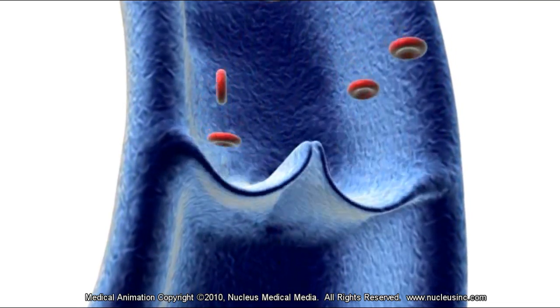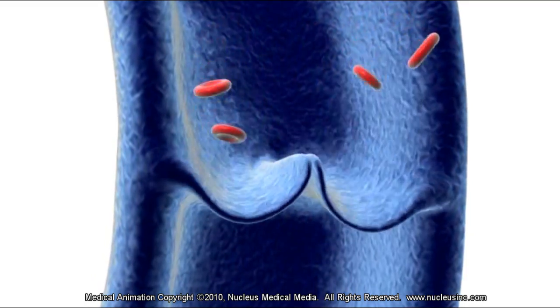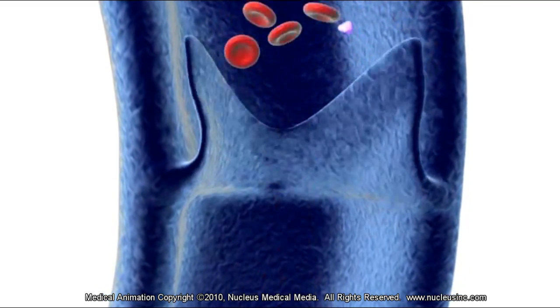When the flow stops and reverses, the valves will close to prevent the blood from falling back to the feet, sort of like a series of locks on a river.